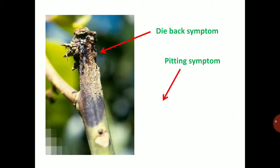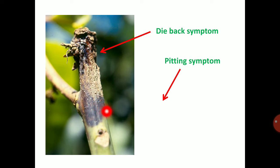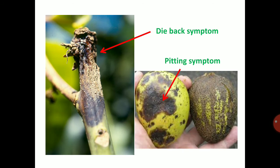Next, it will produce dieback symptom in young twigs. It will infect the young twigs from tip downward, giving the dieback symptom. Black color lesions are present in twigs. Next, the pitting symptom — one of the typical symptoms of anthracnose is black color pitting symptom or sunken lesions.